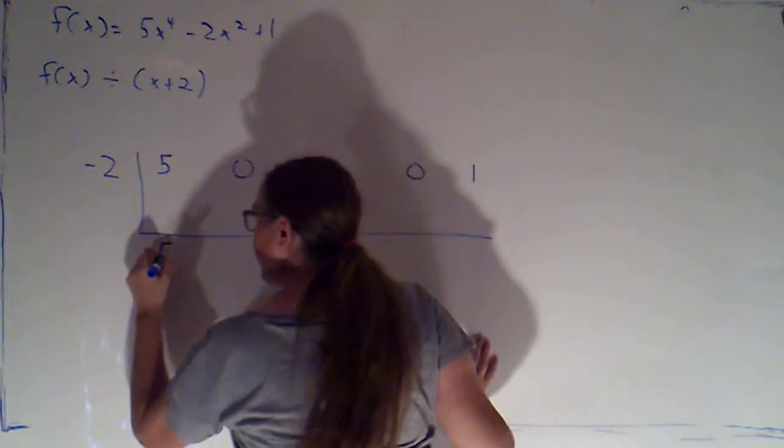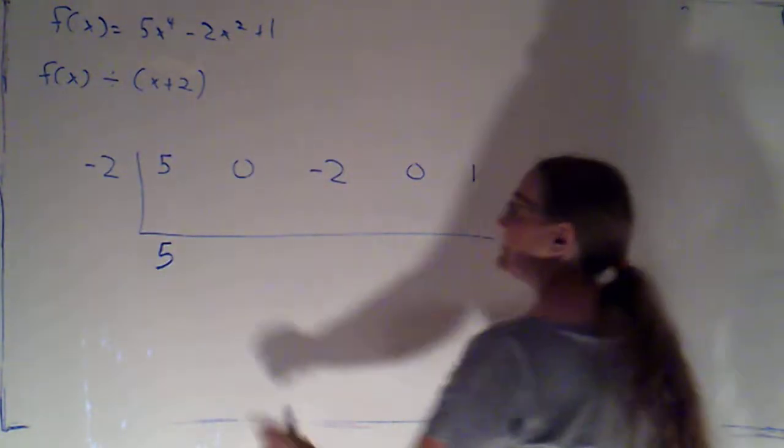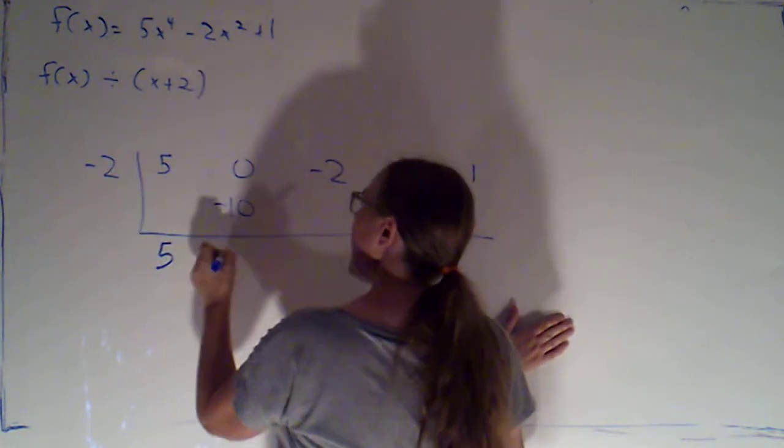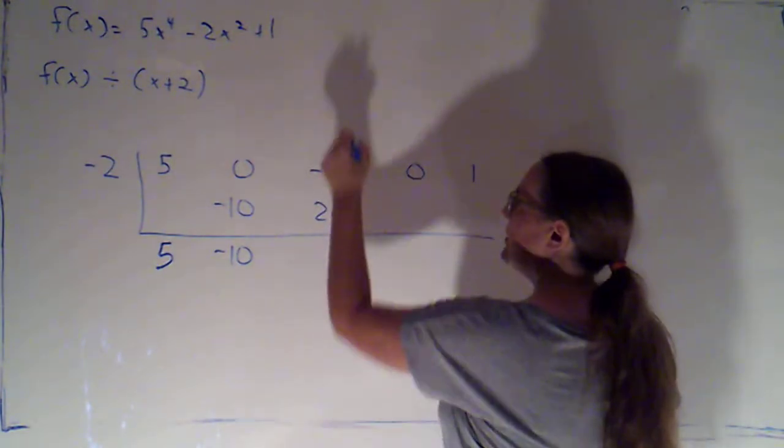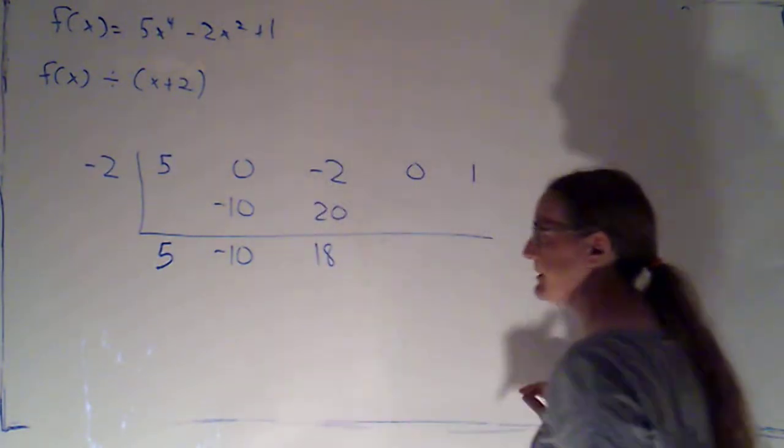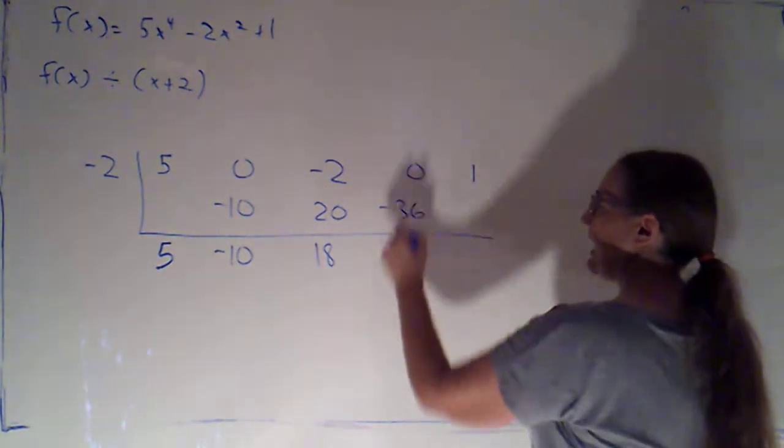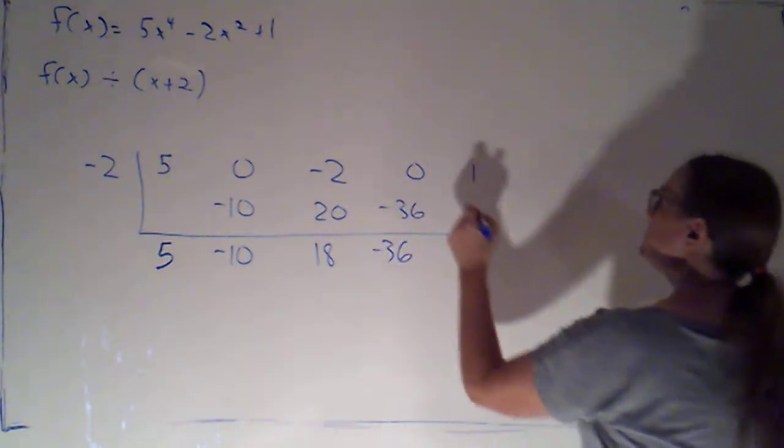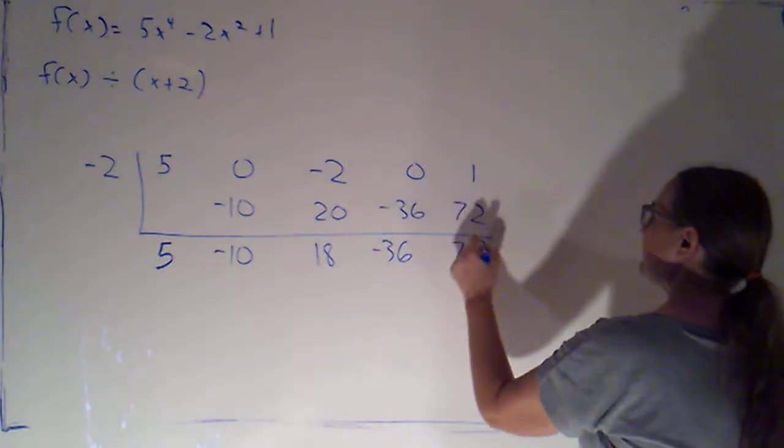So then I bring down the 5, and now it's just a question of multiply and add until we're done. 5 times negative 2 gives me negative 10. We add and get negative 10. Times negative 2 is 20. We add and get 18. Times negative 2 is negative 36. Adding, we get negative 36. Times negative 2 is positive 72. We add and get 73.